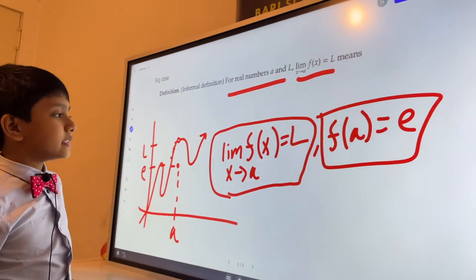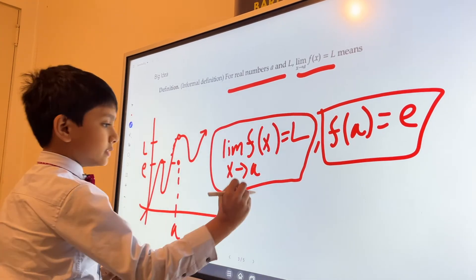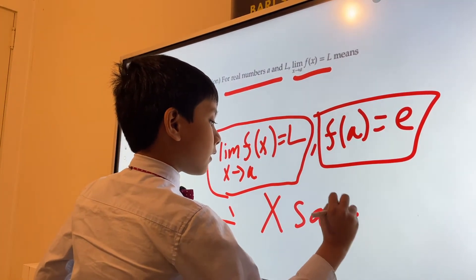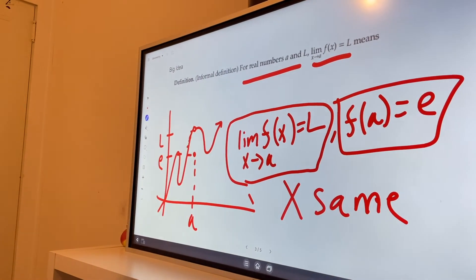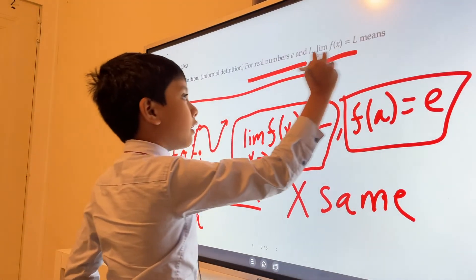So that means that the limit of f of x as x approaches a is not the same as f of a equals e. So that is how this works.